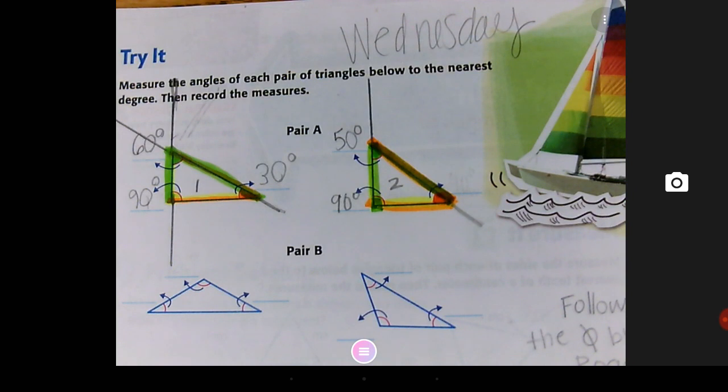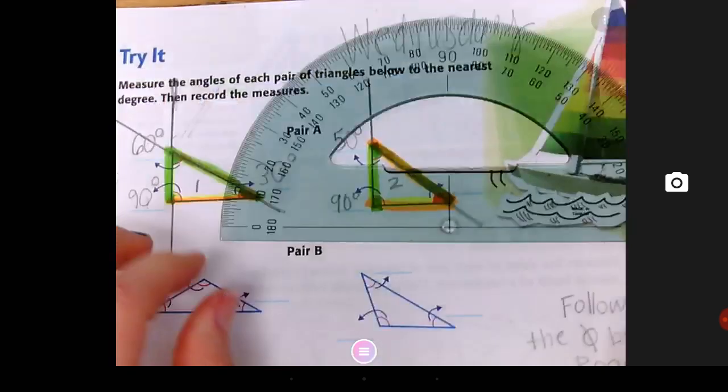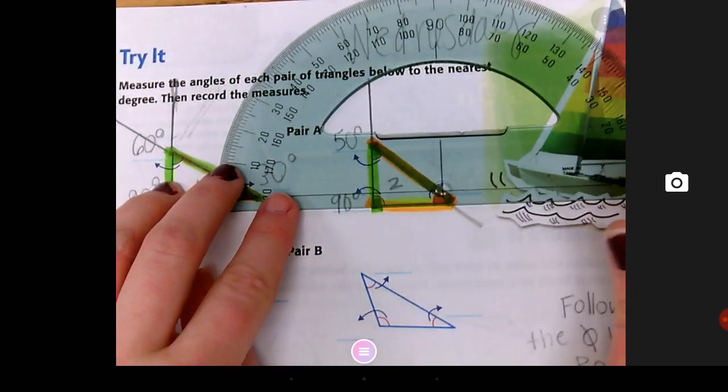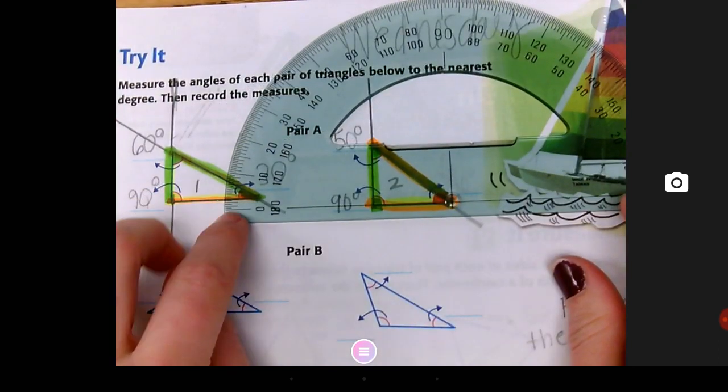Anybody get something different than 40? No way. Every single person in here got 40? Yeah. Shaquine? Okay. Let's see how correct you are. Let me see if I can write it up here. Bubble on the corner. Can you see now?